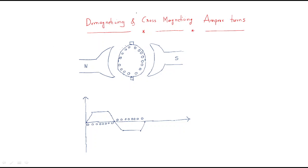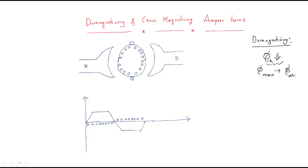In this session we will discuss a detailed analysis of the demagnetizing and cross-magnetizing ampere turns. First, let's recollect what demagnetizing means. As the name suggests, magnetization will be decreased — the resultant flux decreases. The resultant flux refers to the effect on the main field flux due to the armature flux. When this resultant flux decreases, that is called demagnetization.